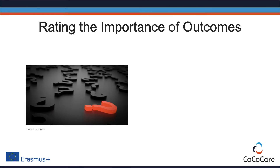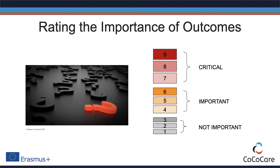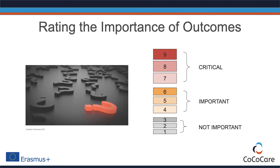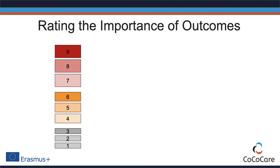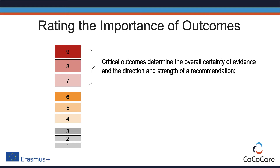Not all outcomes are equally important for decision-making. GRADE recommends rating the relative importance of outcomes on a 9-point Likert scale. Outcomes should be classified as critical, important, and not important. Outcomes rated between 7 and 9 are critical for decision-making — they determine the overall certainty of evidence and the direction and strength of a recommendation.